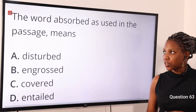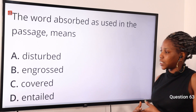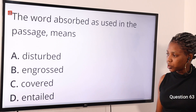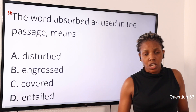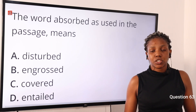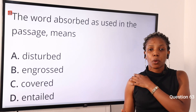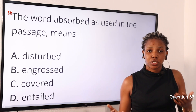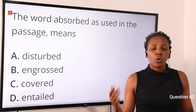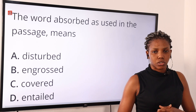Question 63: The word 'absorbed' as used in the passage means — option A: disturbed, option B: engrossed, option C: covered, option D: entailed. The word absorbed in the passage means to interest greatly or to take in one's attention. The word 'engrossed' also means to take up one's attention. So option B is the correct answer.